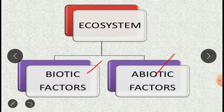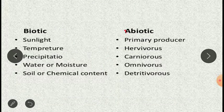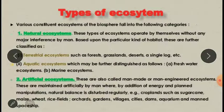Biotic factors include consumers, that is your animals and plants, bacteria — all these are going to be the biotic, that is living organisms. Whereas the abiotic factors are the non-living things like water, soil, air, temperature, etc.